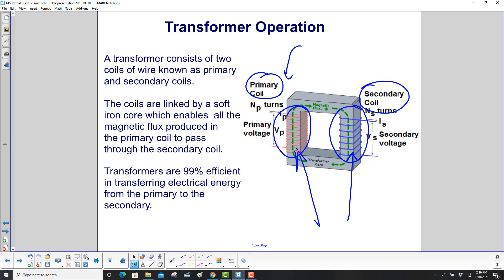Those coils are not electrically connected; they're separate from each other. Transformers are 99% efficient in transferring electrical energy from the primary over to the secondary. Very little is turned into heat.